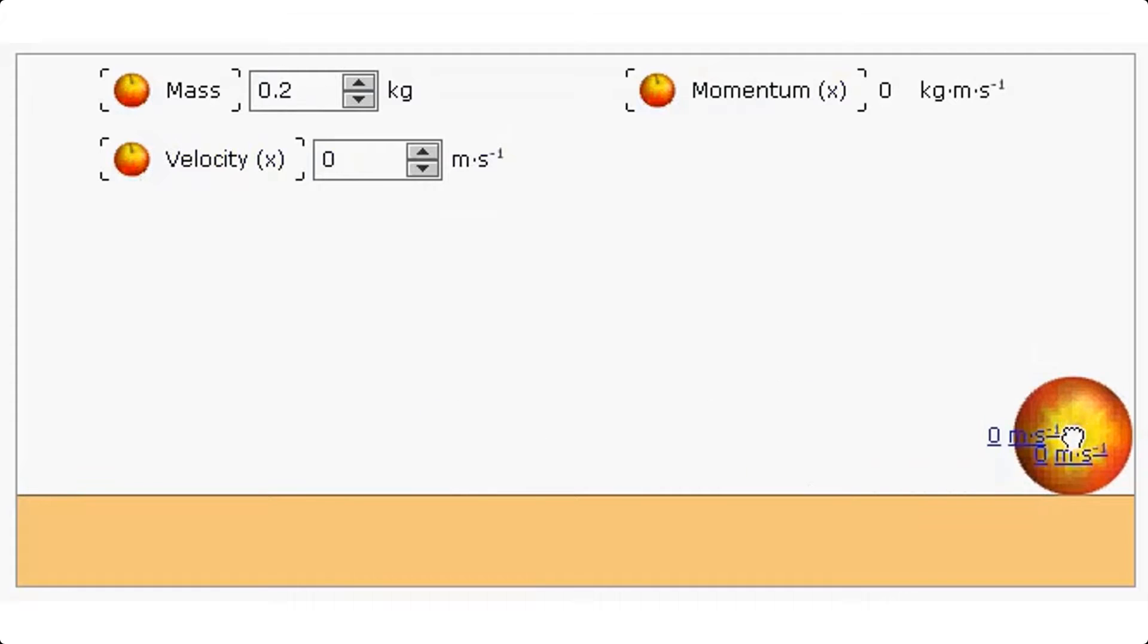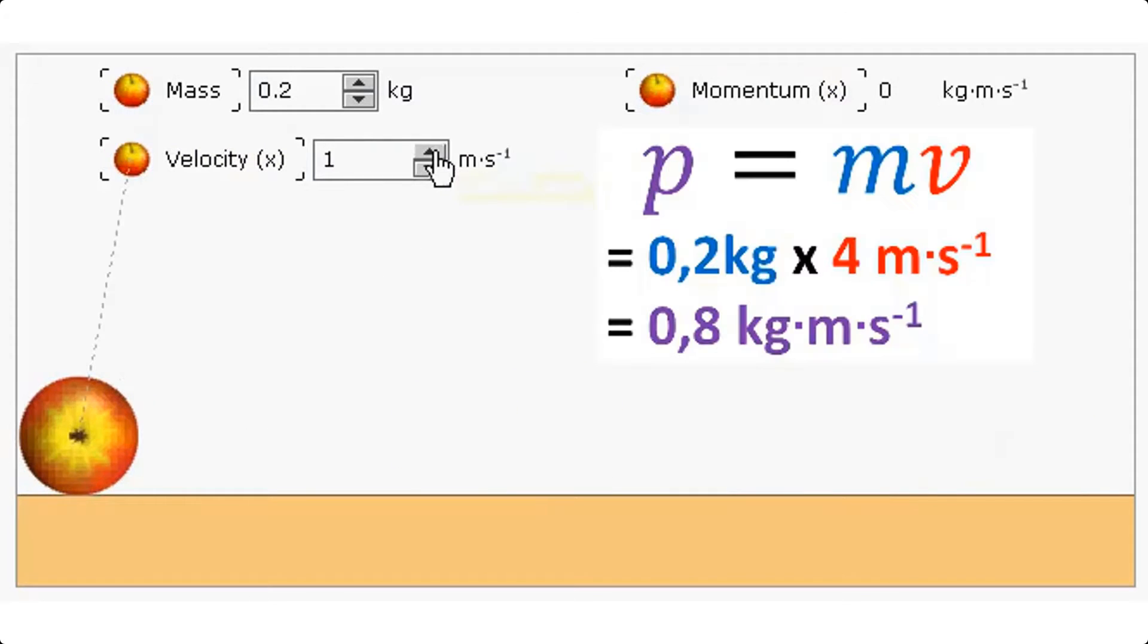One more question. What about if the velocity of the apple is 4 meters per second? 0.8 kilogram meter per second. Mass times velocity.